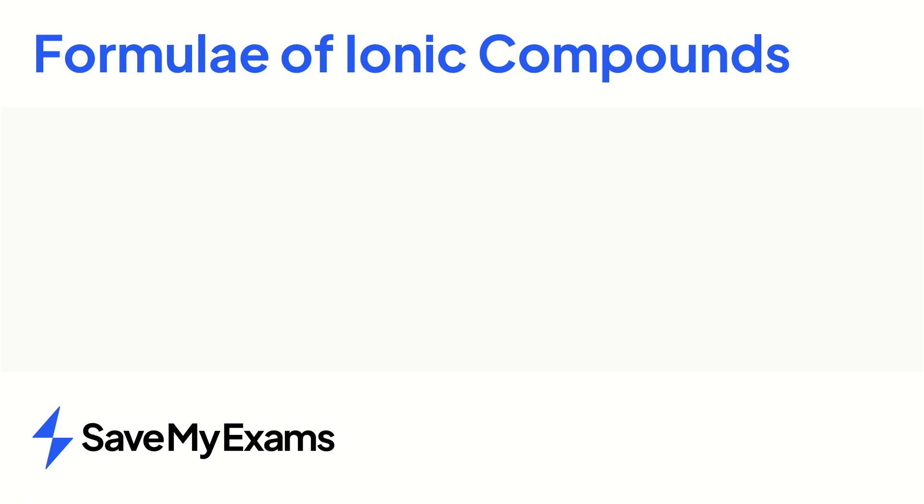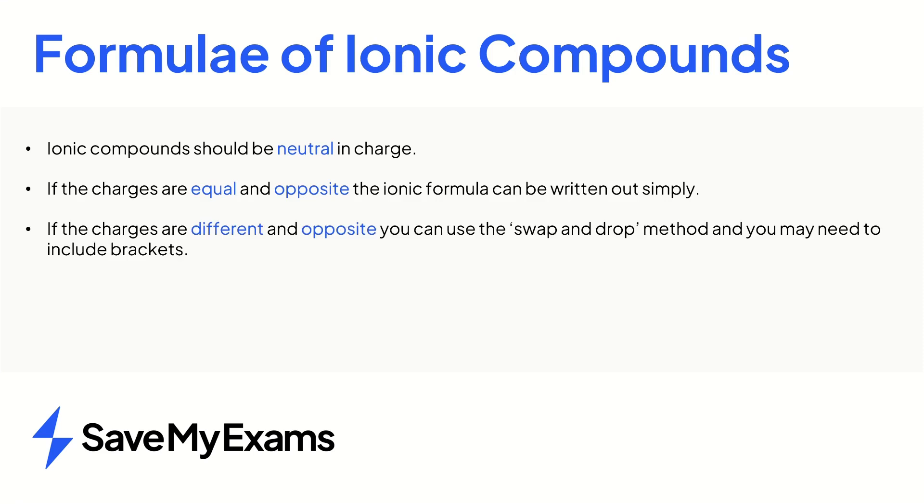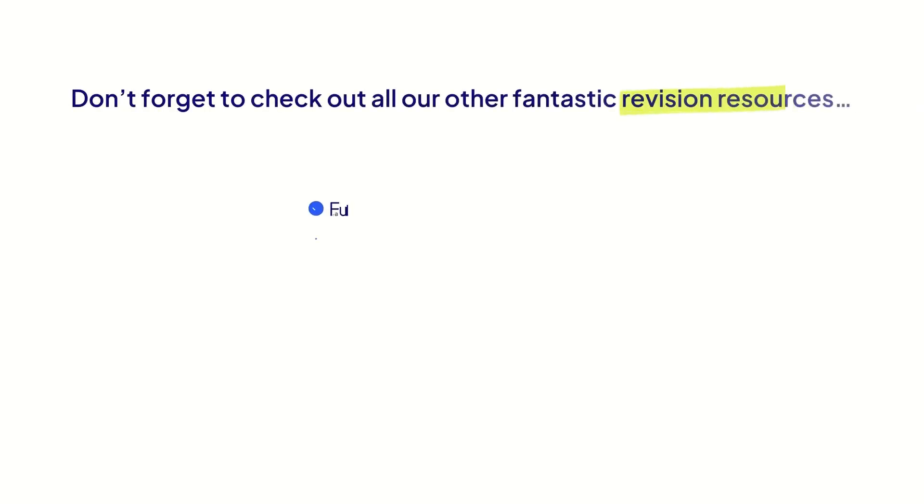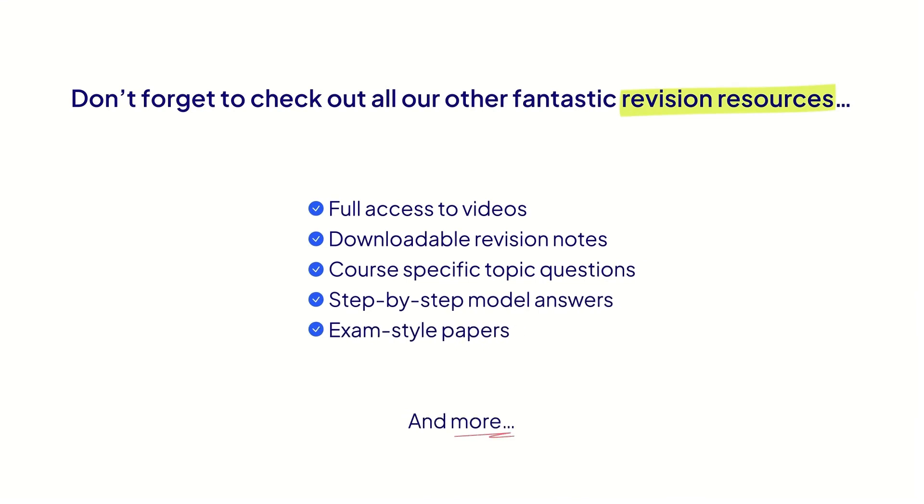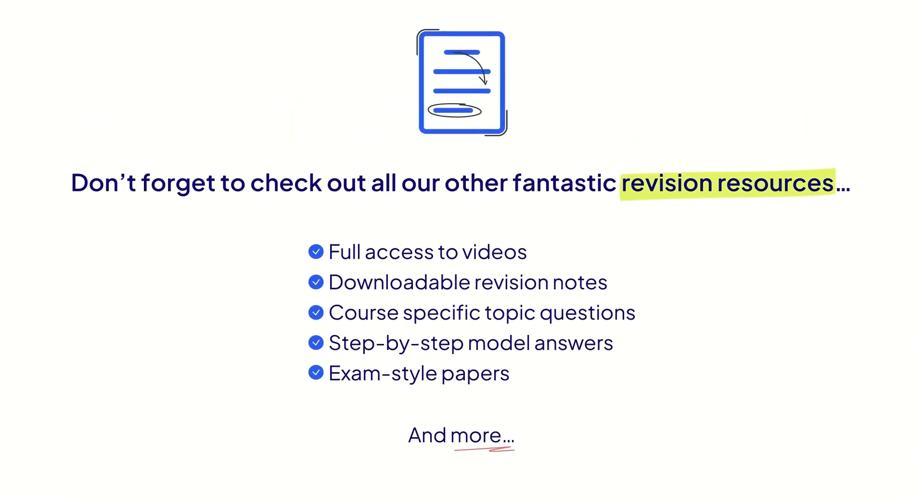In summary you need to be able to write the formulae for ionic compounds. Remember that ionic compounds should be neutral in charge. If the charges are equal and opposite the ionic formula can be written out simply. If the charges are different and opposite you can use the swap and drop method and you may need to include brackets. Make sure the charges from the positive and negative ions add up to zero. Don't forget to check out all our other fantastic revision resources here at SaveMyExams.